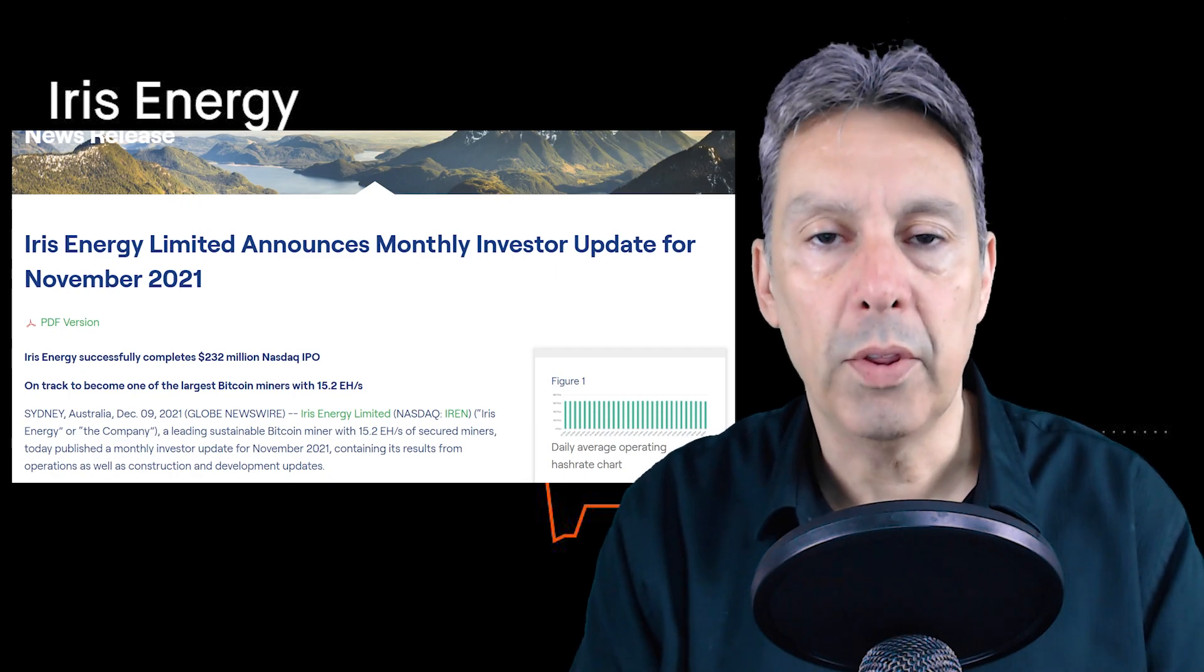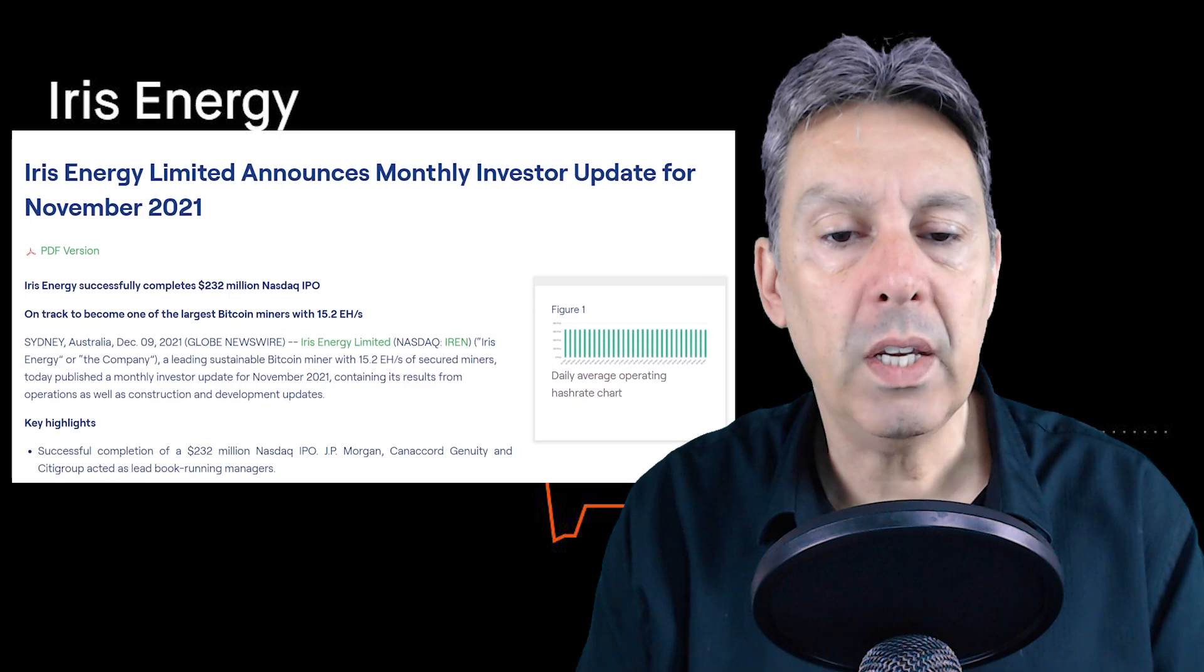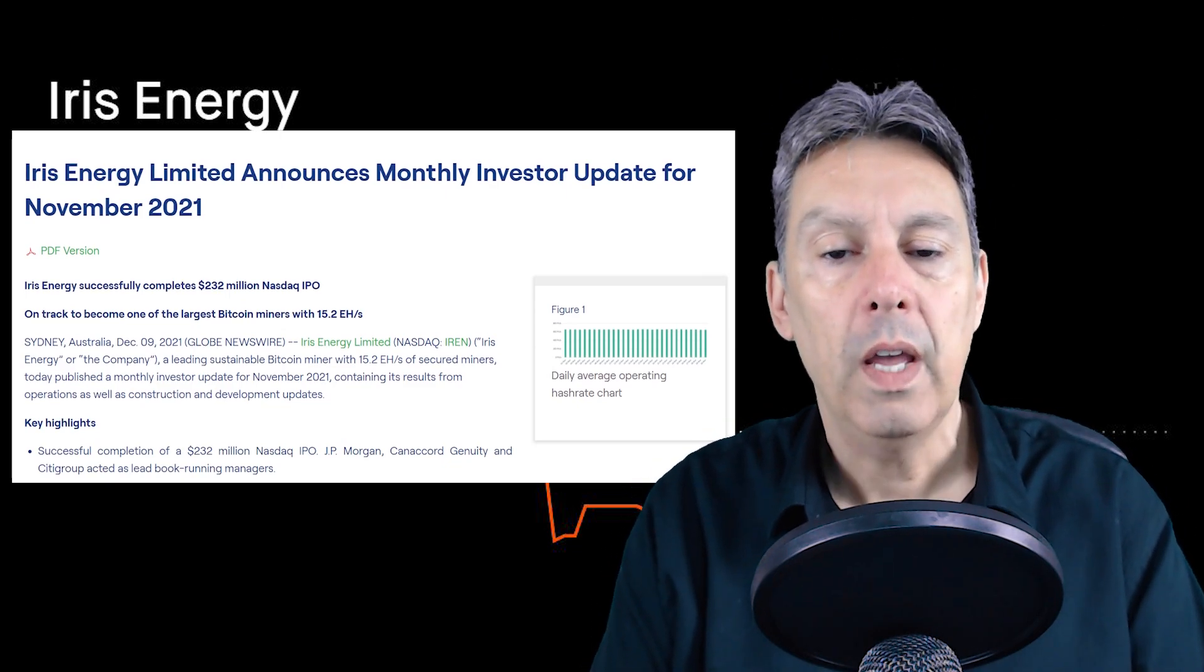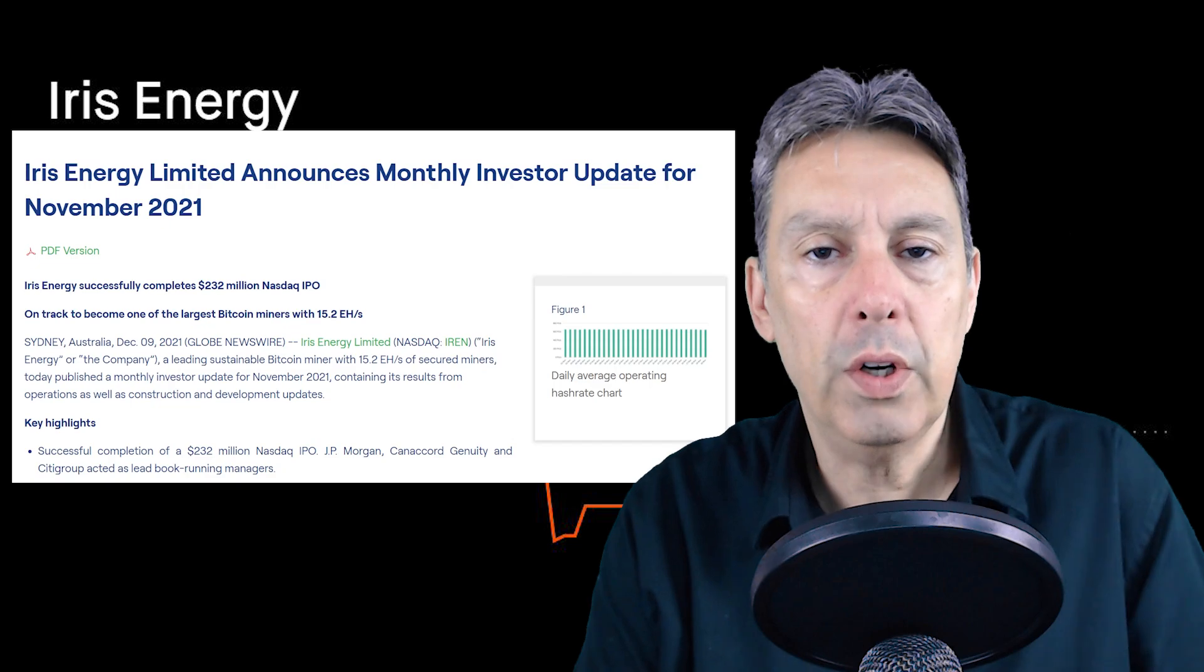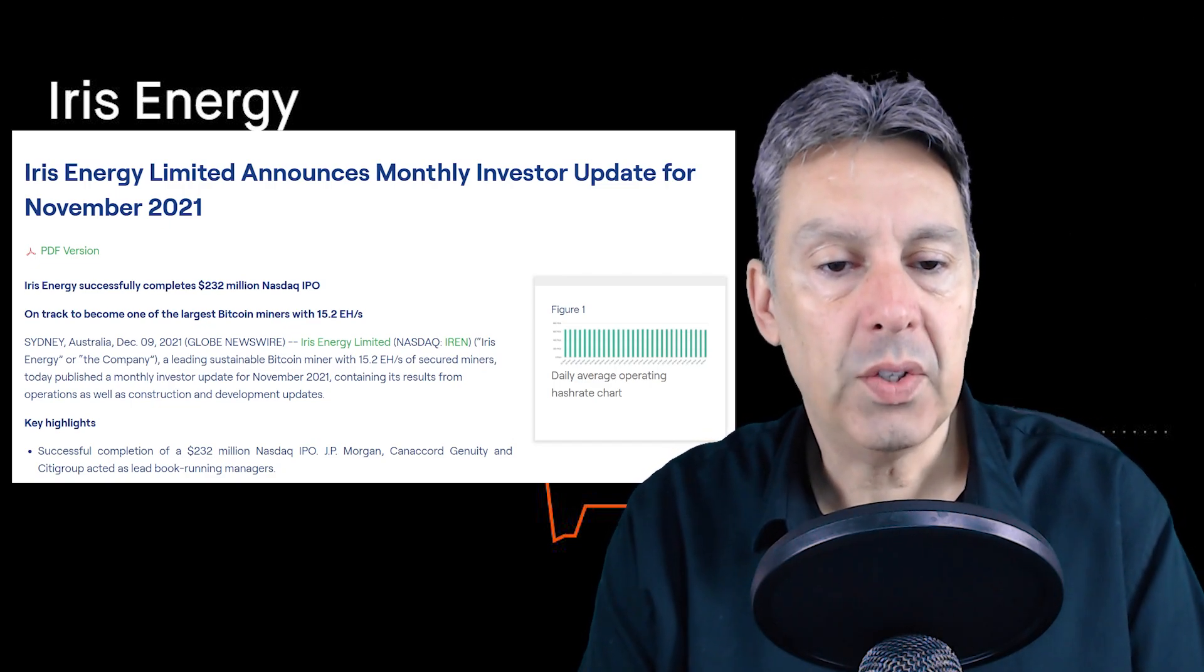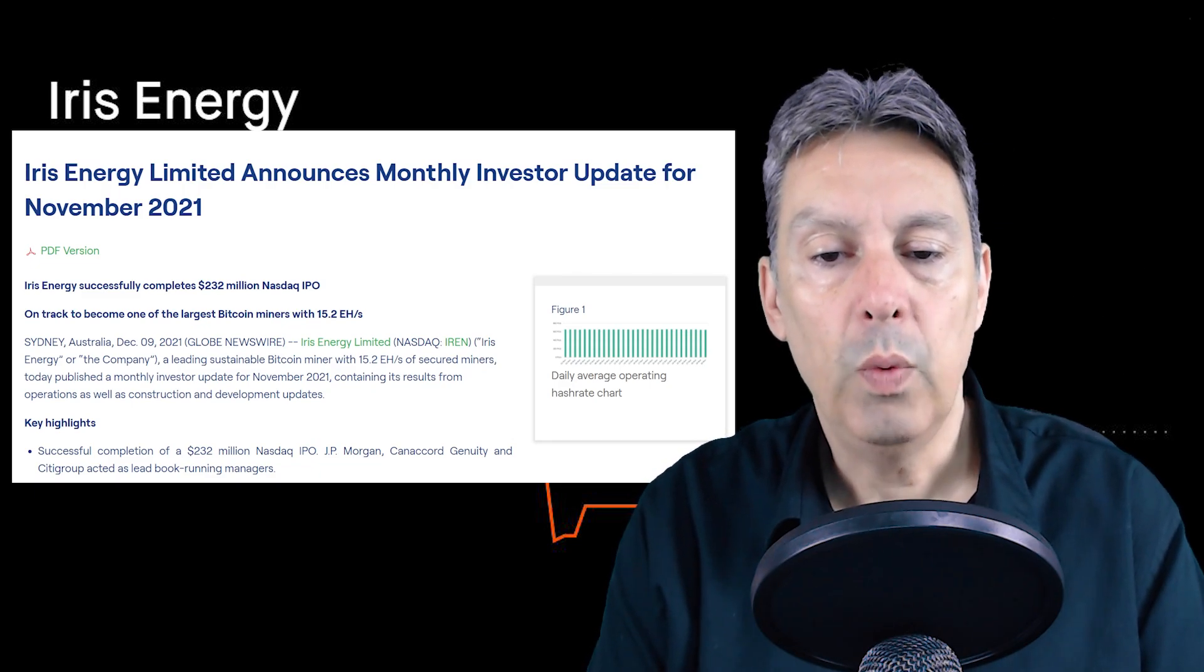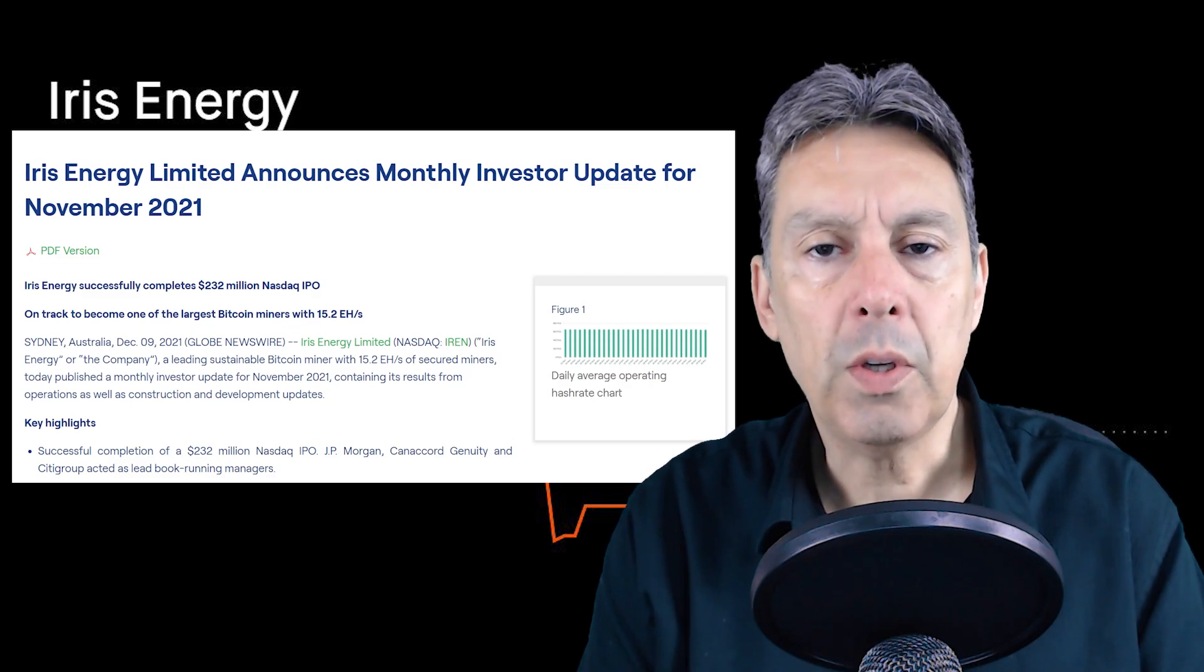A couple key points here. Iris Energy successfully completes $232 million Nasdaq IPO. That's encouraging. Obviously they're going to need that cash, because the next thing they say is they are on track to become one of the largest bitcoin miners with 15.2 exahash per second. This is a two-year plan that they have.